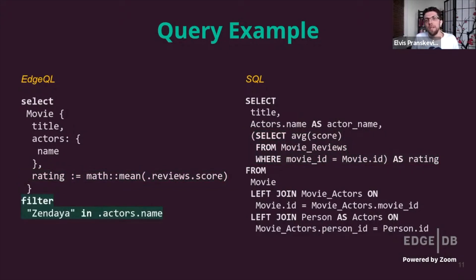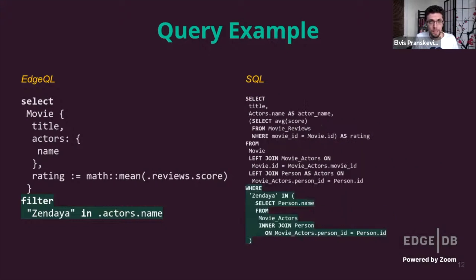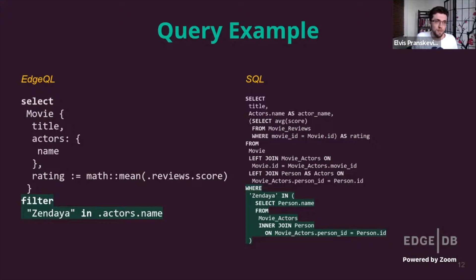We rarely need to select everything, so let's add an interesting filter condition — get all movies where Zendaya played a role. In EdgeQL it's a simple operation on an associated set. In SQL we've got a similar construct, except again we need a subquery and verbose joins. By this point you see a clear pattern: you have to repeat the joins over primary keys over and over again, making everything unnecessarily verbose and hard to read, even for simple cases.